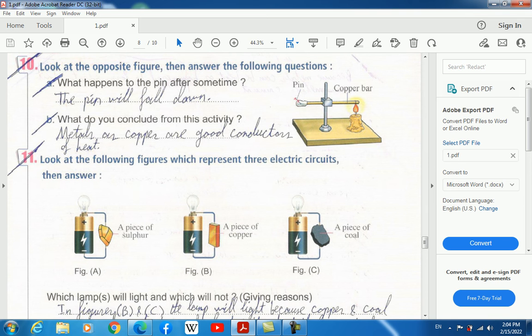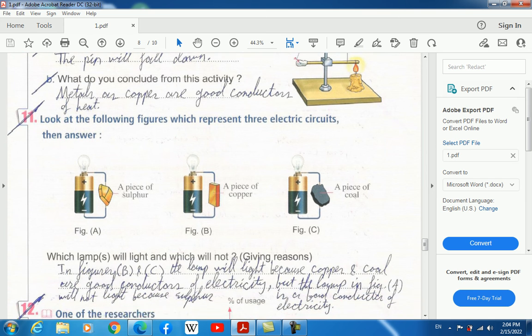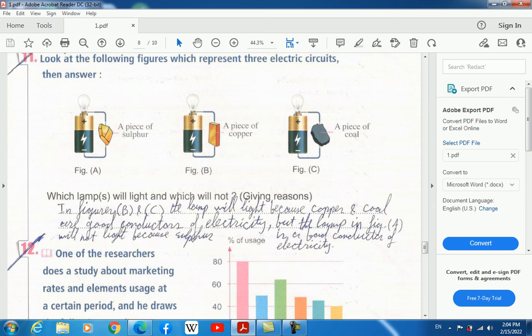What do you conclude from this activity? Metals, such as copper, are good conductors of heat. This means the heat transferred from the candle to the pin through the copper bar. This means the heat is transferred in the copper bar. So the copper bar itself is a good conductor. To be more specific, the material, which is copper, is a good conductor of heat.